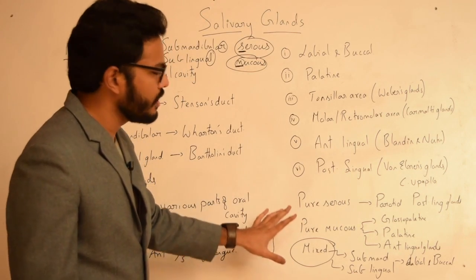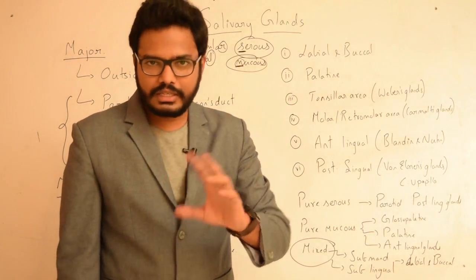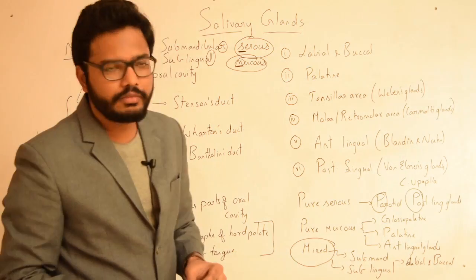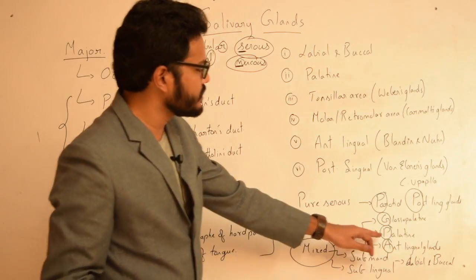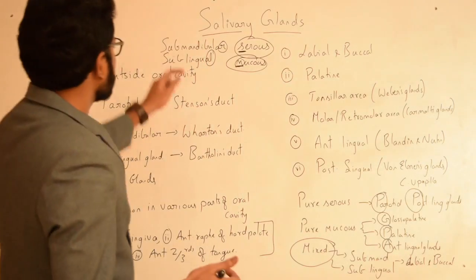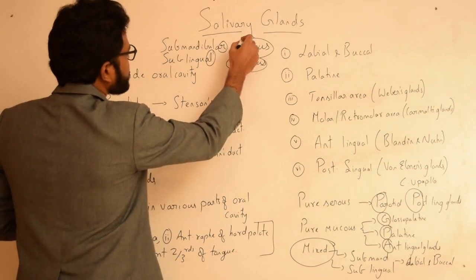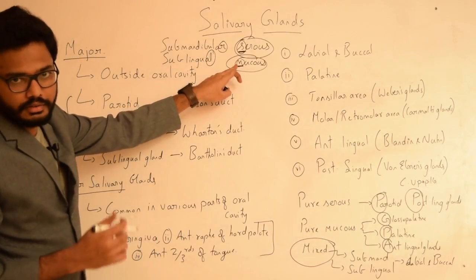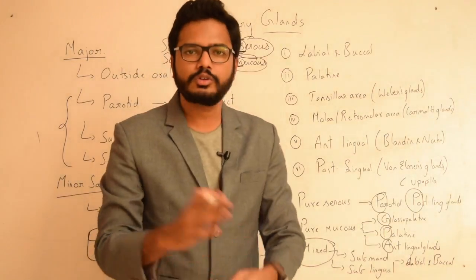Regarding the nature of fluid secreted: pure serous — remember PP: parotid and posterior lingual. Pure mucus — remember GPA: glossopalatin, palatine, and anterior lingual. In the mixed variety, we have submandibular, sublingual, and labial and buccal glands. Submandibular is mixed with predominant serous secretion — the letter after R is S. Sublingual is predominantly mucus — the letter after L is M. Labial and buccal glands are also predominantly mucus.